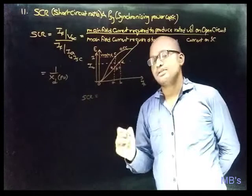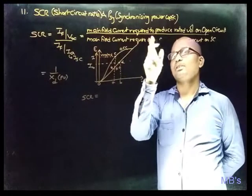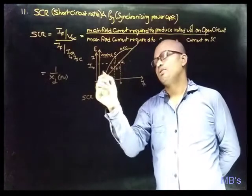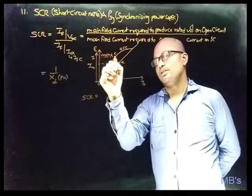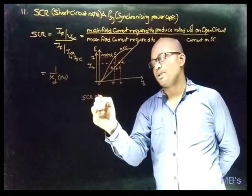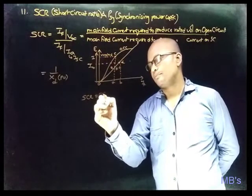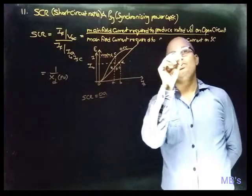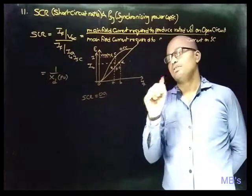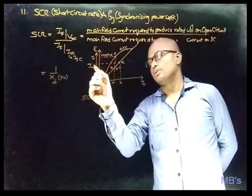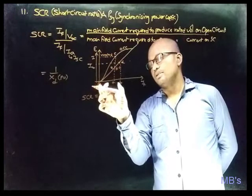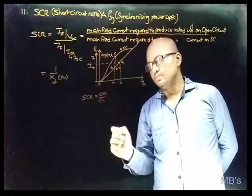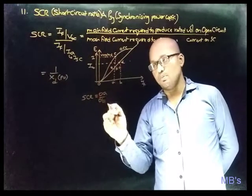From the definition, SCR is represented as follows: the main field current required to produce rated voltage on open circuit corresponds to point POC, with field current OA. The main field current required to produce rated armature current on short circuit corresponds to field current OB. Therefore, SCR is equal to OA divided by OB.